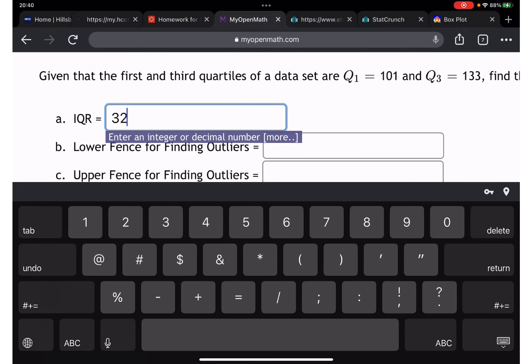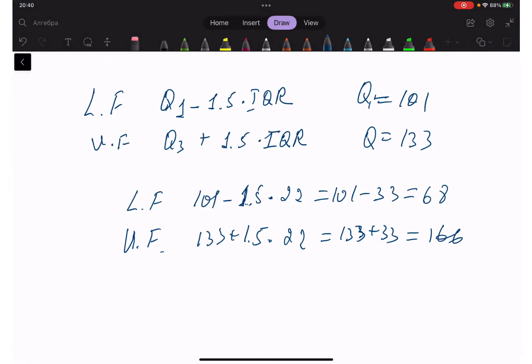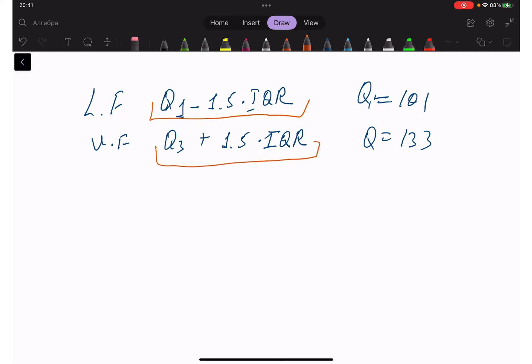For the next question, lower fence - this is the formula we are going to use. For upper - here it is. This is the formula we are going to use for lower fence: Q1 minus 1.5 times interquartile. And for upper level it's going to be Q3 plus 1.5 interquartile.